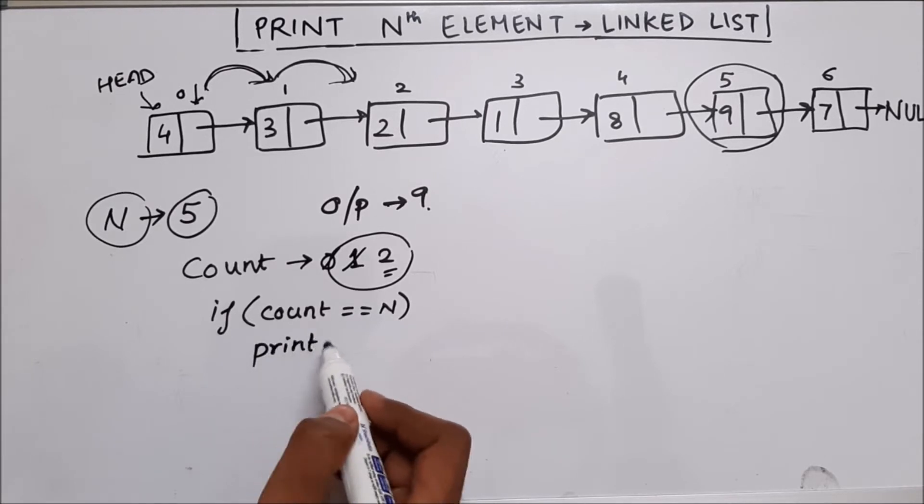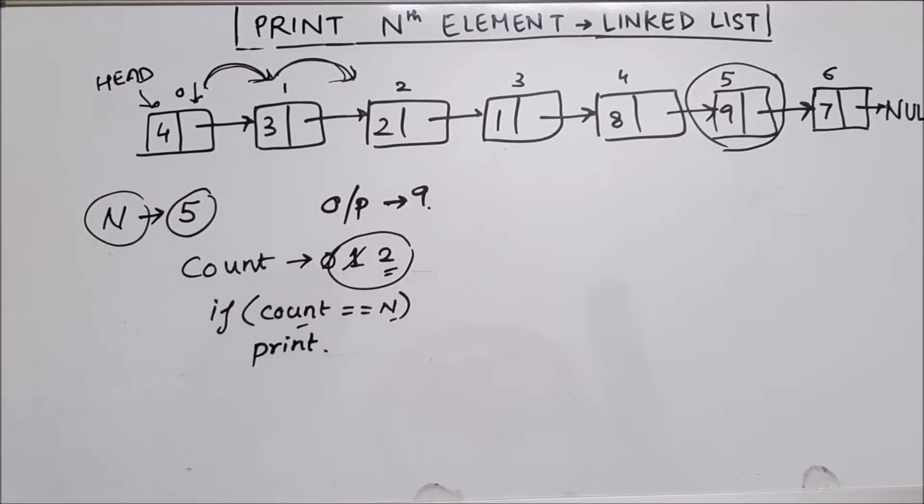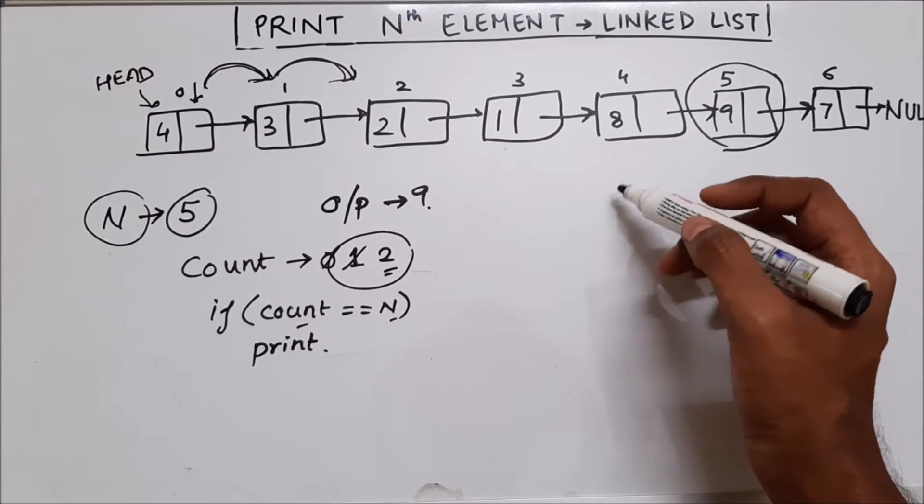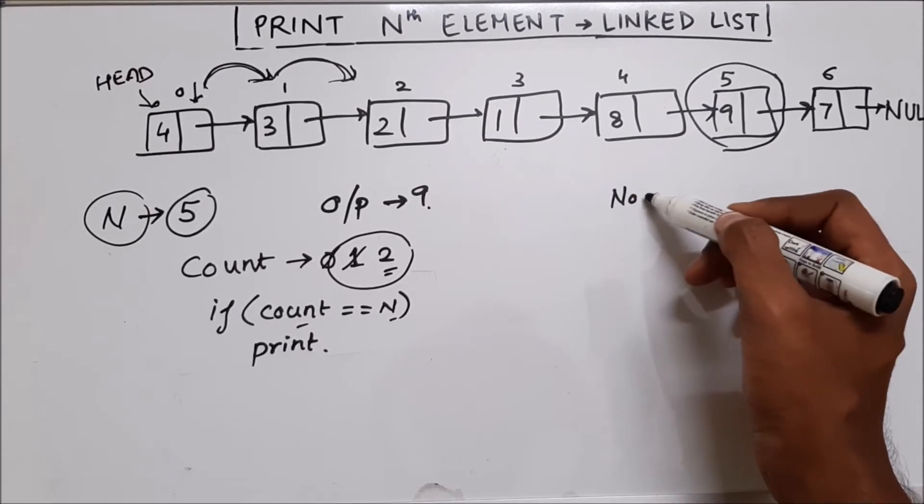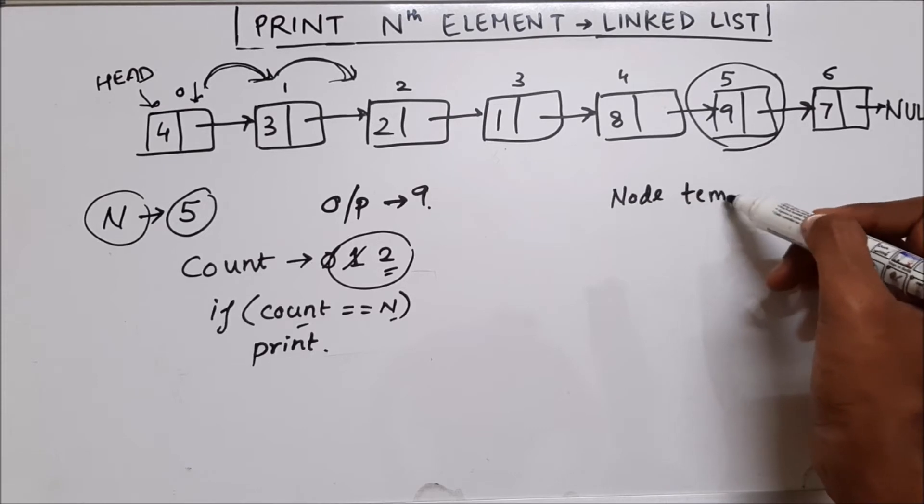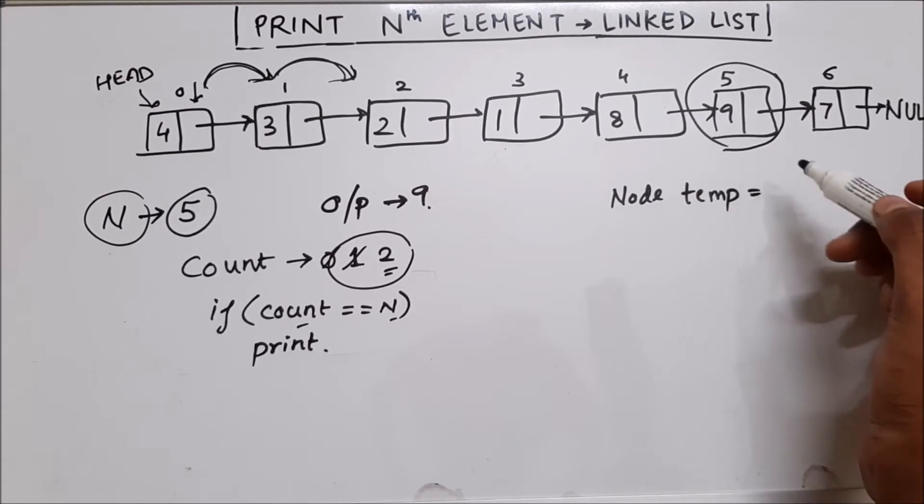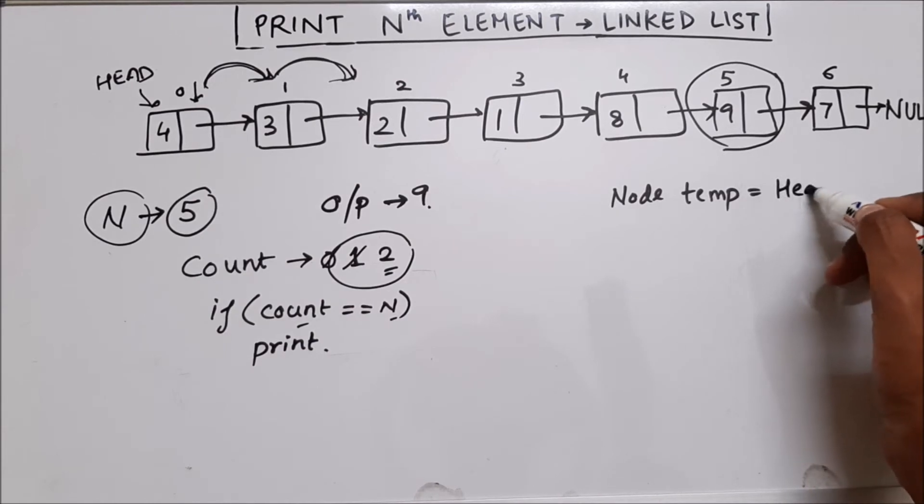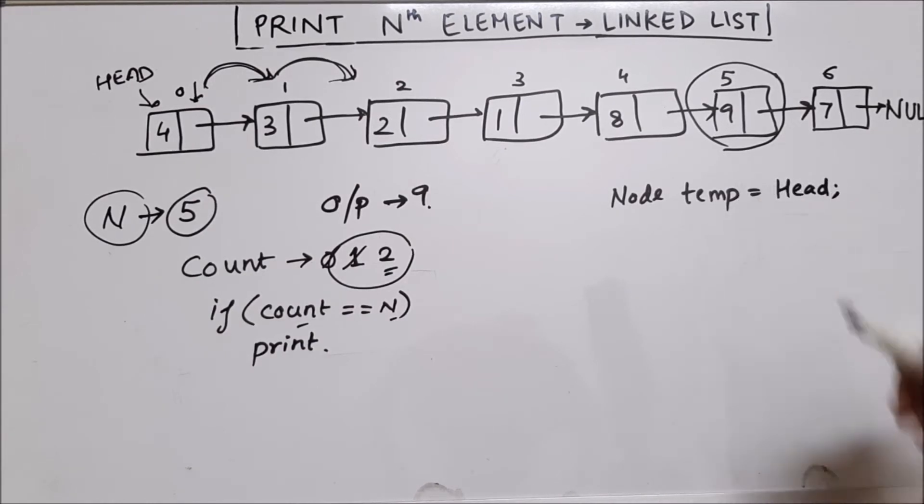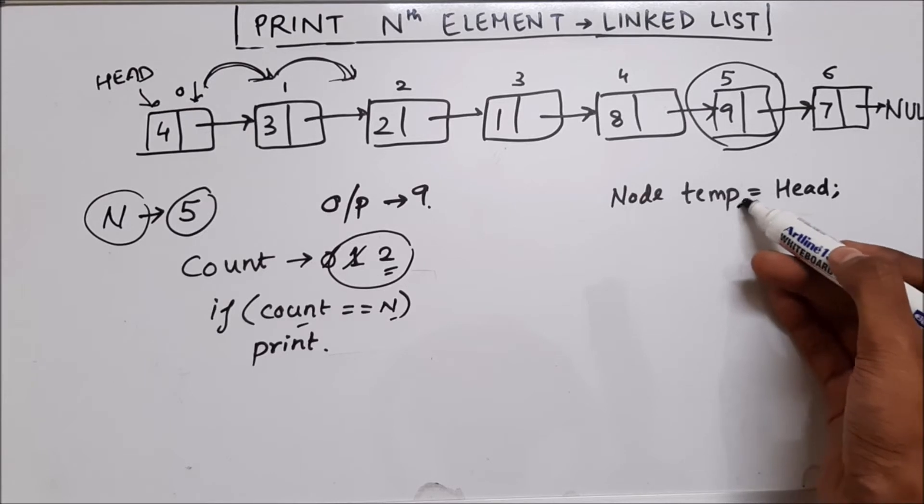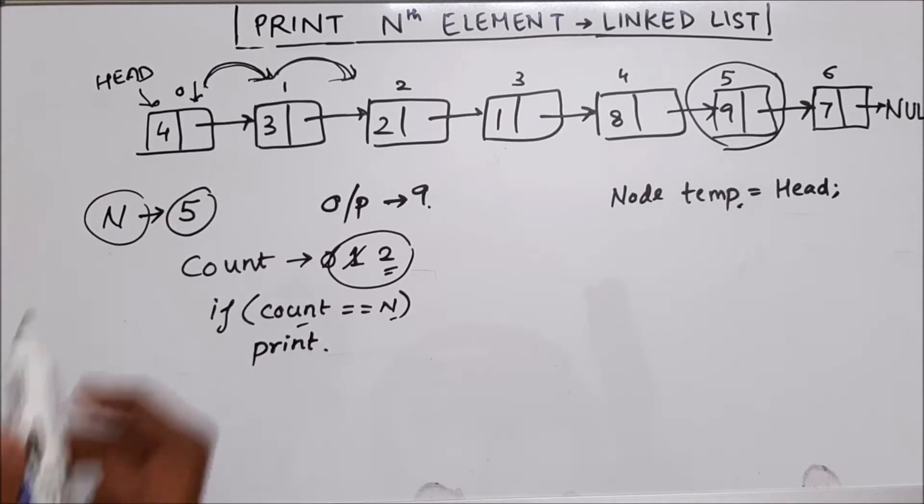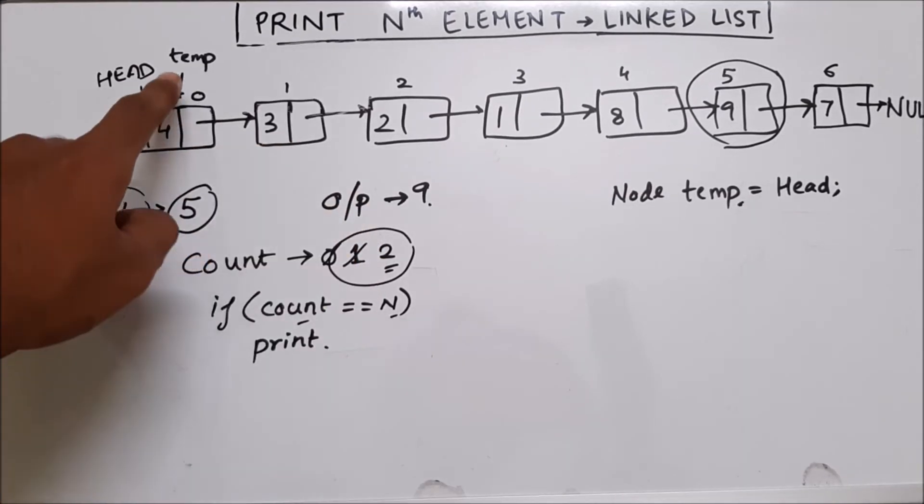So now let's write the code. So first we will create a node, we will call it as temp and it will be pointing to head node. So I will say head. So now we have a node called temp, which is pointing to head. So now we have placed temp over here.